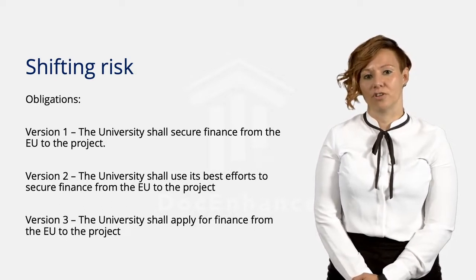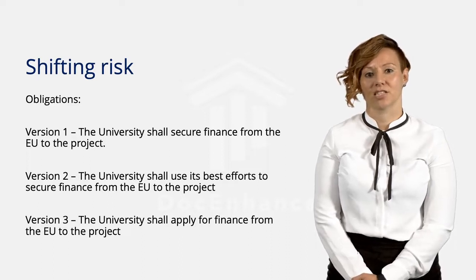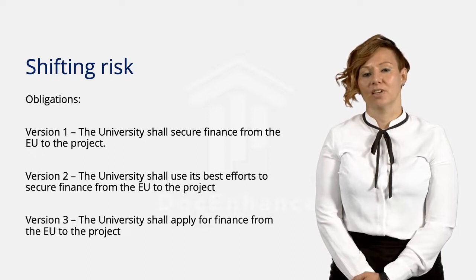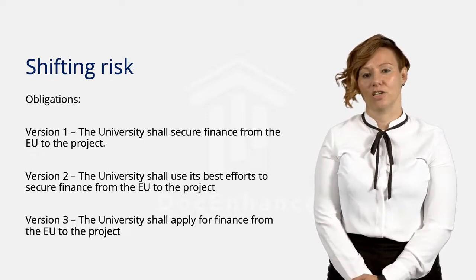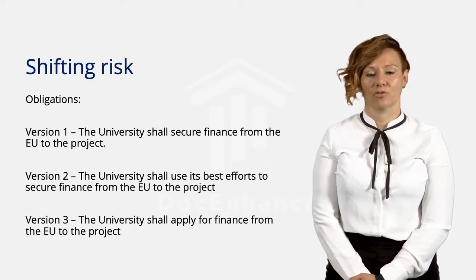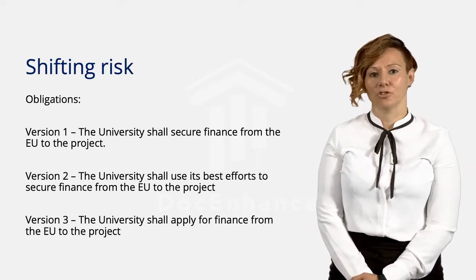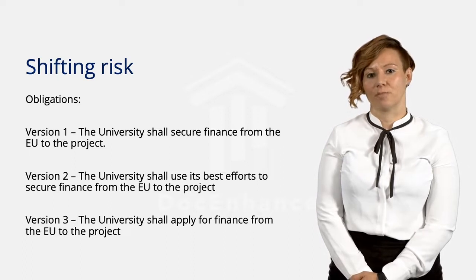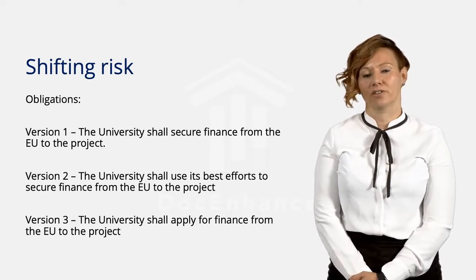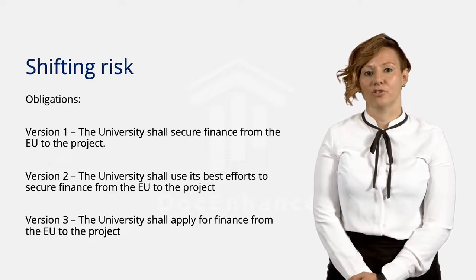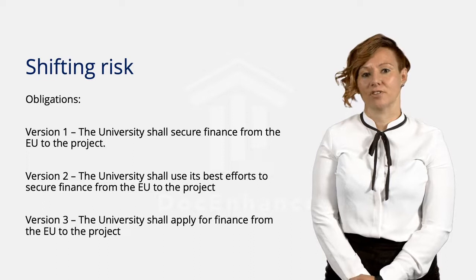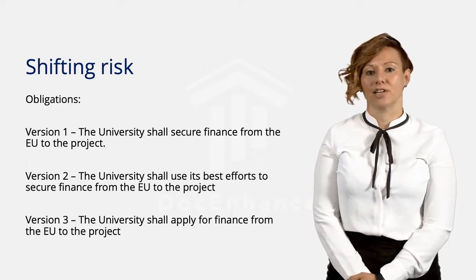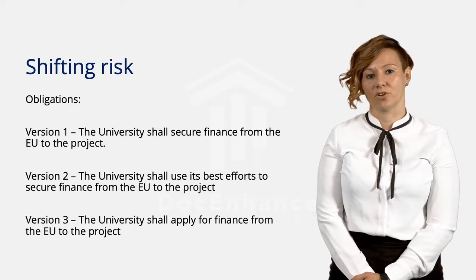Because the university has no control, it risks breaching the obligation. Therefore when drafting for the university, you would want to reduce the risk by reducing the degree of the obligation. However, from the other party's perspective this is a terrific obligation, because if the university does not secure EU finance, the other party has the right to sue for damages. Version 2 changes the university's risk because it is no longer a requirement that the university will secure finance. Instead the university must have tried to secure finance and must have used its best efforts in that endeavour. Nonetheless it still sets a high standard of performance for the university.